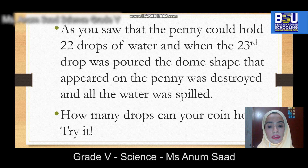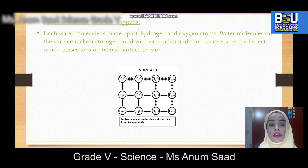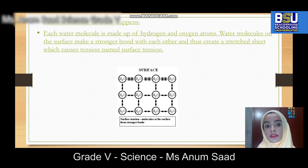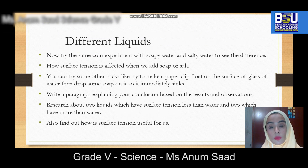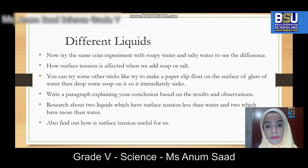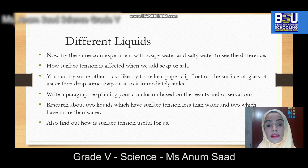While you are doing your experiment, try to do it with different liquids — for example, soapy water or salty water — to see how surface tension is affected when we add soap or salt to water. You can also try to make a paper clip float on the surface of a glass of water, then drop some soap in it to see what happens.